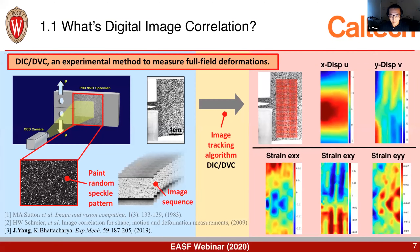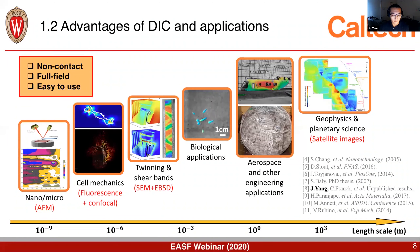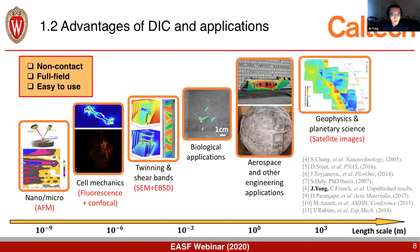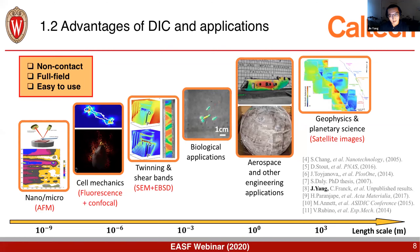I'm trying to improve the image tracking algorithm here. DIC has many benefits: it's a non-contact method, it provides full-field measurements, and it's quite easy to use. It can be combined with many other diagnostic techniques to achieve measurements at various length scales. For example, combined with atomic force microscopy you can measure deformation at the nanometer scale; with fluorescent beads you can measure cell mechanics at the micrometer scale; with scanning electron microscopy and EBSD you can measure twinning and shear bands in alloys. It has many applications in biological and engineering fields, and in geophysics you can use satellite images to monitor earthquakes or track glacier movement.